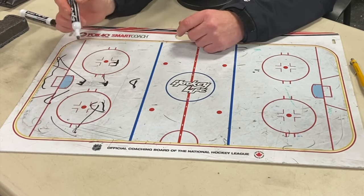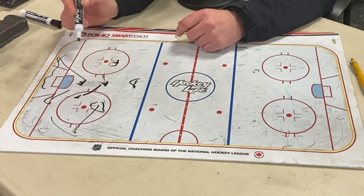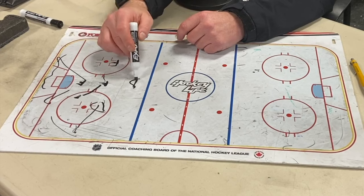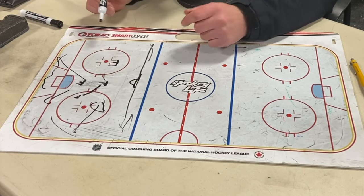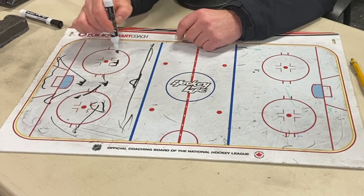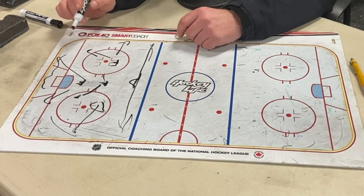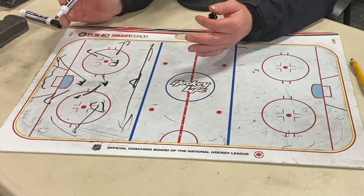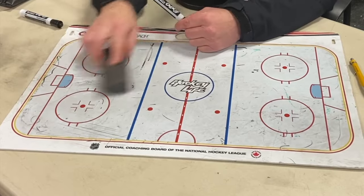If you carry the puck this way, there's not really a lot of switches — this guy would just pop out and be an option. The D would be taking anything in this area. This guy's forechecking if he has to on loose pucks — just whatever makes sense. That's not a clean answer, but let me show what I'm thinking.